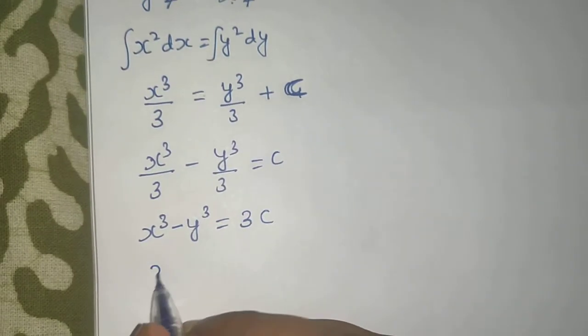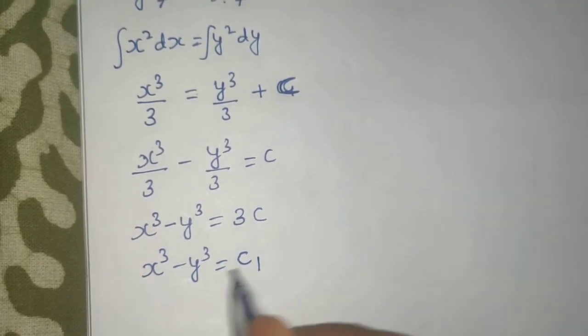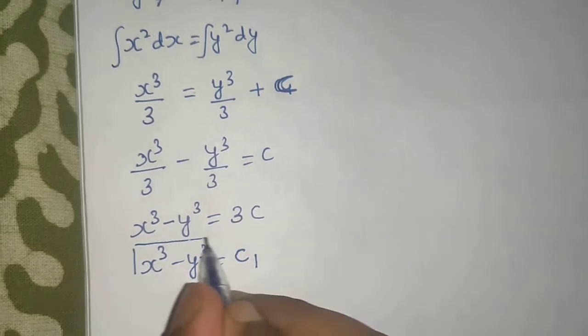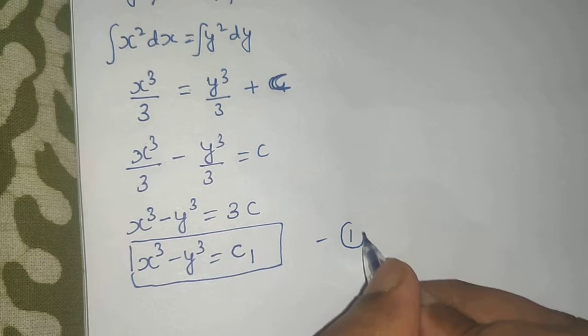Now let that 3C be equal to my constant, another constant which is C1. So this is my first equation which I obtained.